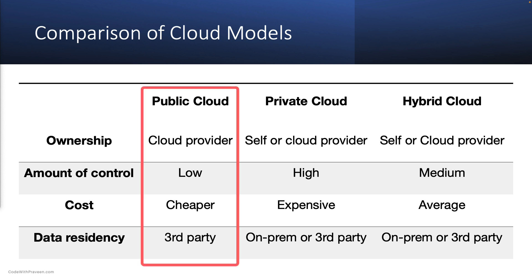For instance, a public cloud is best suited for organizations that require scalable resources with low upfront cost and it can be accessed from anywhere with an internet connection. Public clouds also offer a wide range of services including virtual machines, storage, and databases which can be easily deployed with just a few clicks. However, public clouds may not be suitable for organizations requiring complete control over their data and infrastructure or those requiring strict data security and privacy regulations.